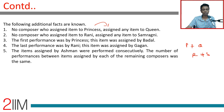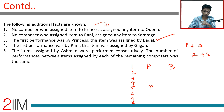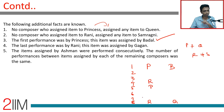The first performance was by Princess, and this item was assigned by Badal. So position 1 is Princess assigned by Badal. Since the same order repeats, the fifth position should also be Princess. The last performance was by Rani, done by Gagan. So position 8 is Rani by Gagan, and position 4 is also Rani.